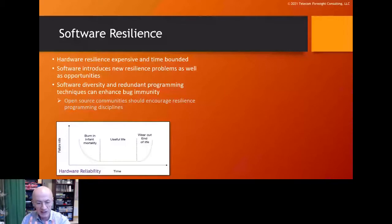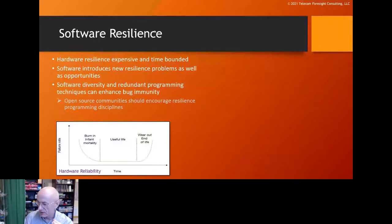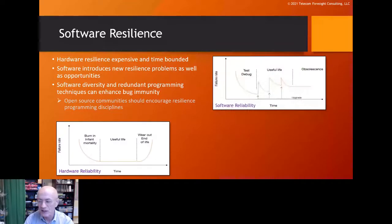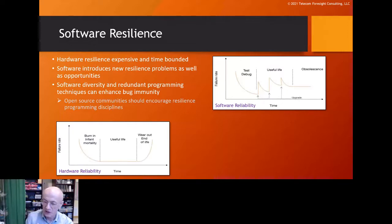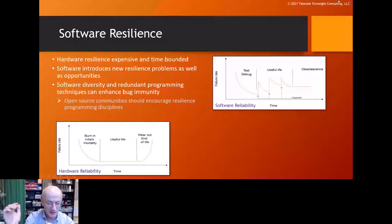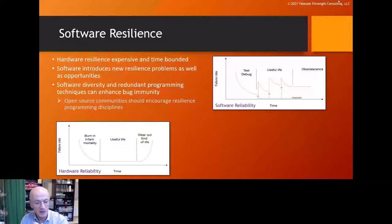From the hardware world we know the bathtub curve — early failures, a stable period, then wear-out. Software has similar characteristics. During test and debug there are many bugs and crashes. As time passes, software updates fix bugs but introducing new ones, creating a recurring cycle of instability after each release. In telecommunications we need predictability — we want to ensure software updates do not produce an unreliable network.